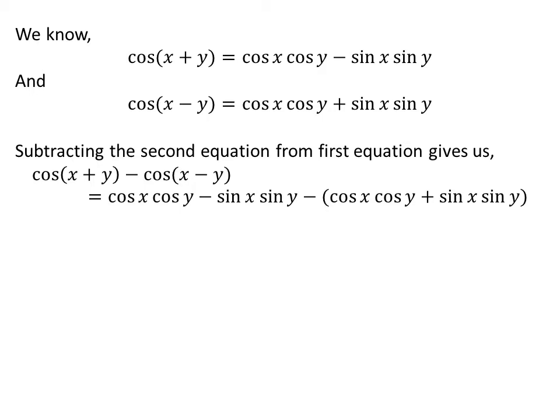Subtracting the second equation from the first equation gives us: cosine of x plus y minus cosine of x minus y is equal to cosine of x times cosine of y minus sine of x times sine of y, minus the whole expression cosine of x times cosine of y plus sine of x times sine of y.